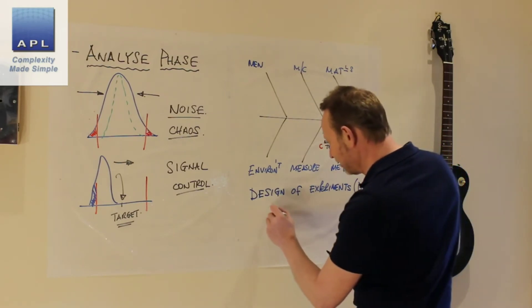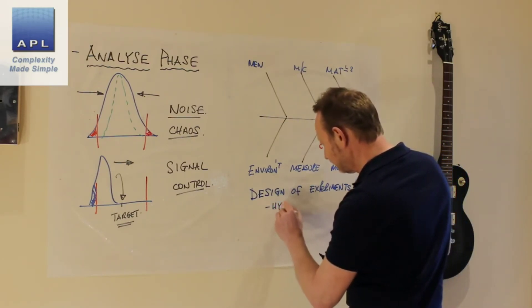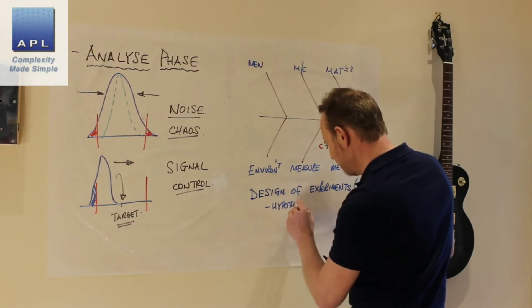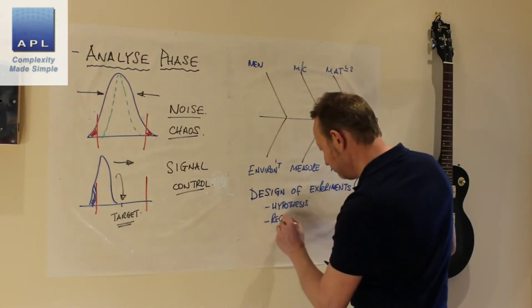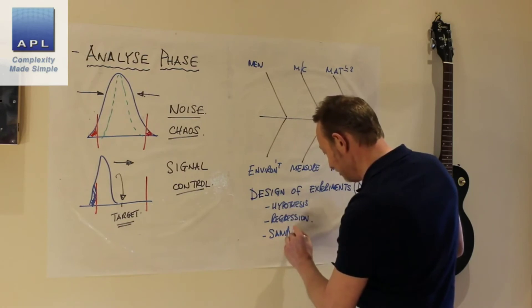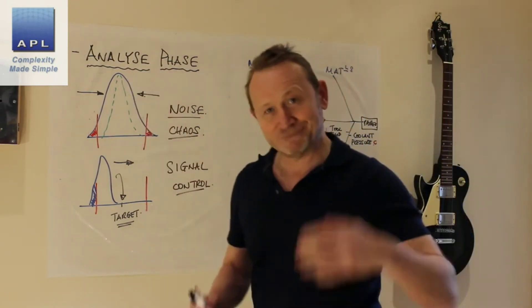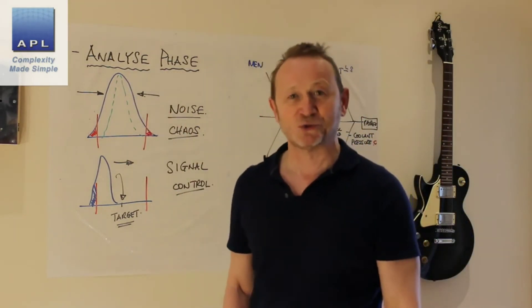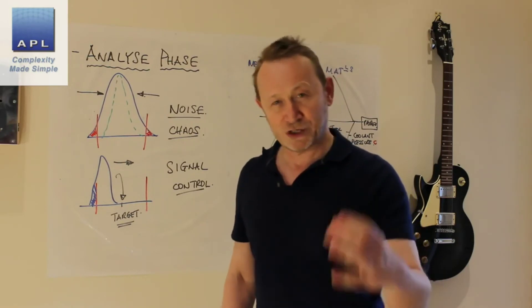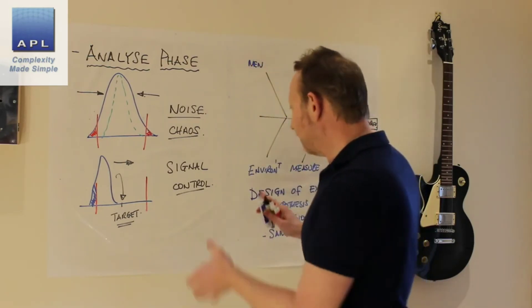Now inside the DOE of course, what do we get? Well we get things like hypothesis tests get used here, regression gets used here. What else? Sample size gets used here.